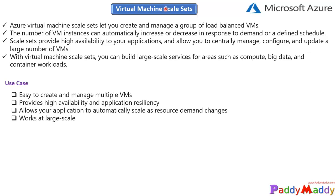All of that can be done automatically with the help of virtual machine scale sets. You have built-in scale-in and scale-out options with three different profiles that can be configured: a general profile, a fixed schedule, or a recurring schedule — for example, scaling only on weekends or every Friday. That's the advantage you have with scale sets.